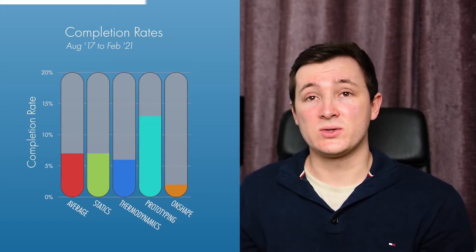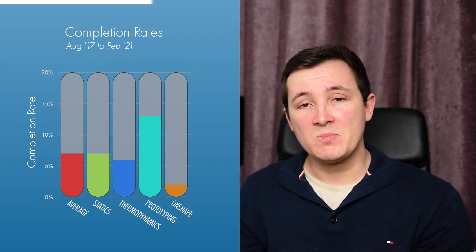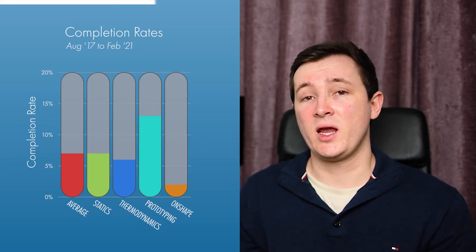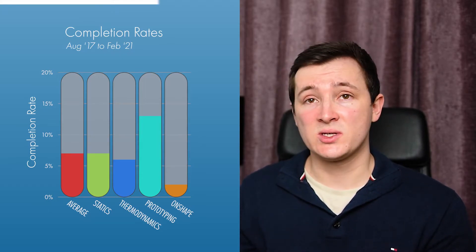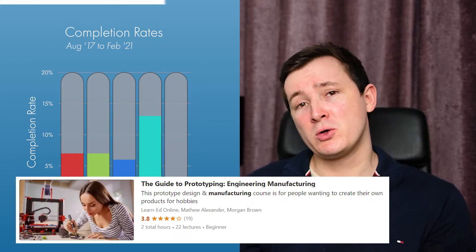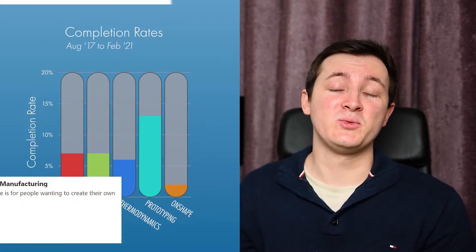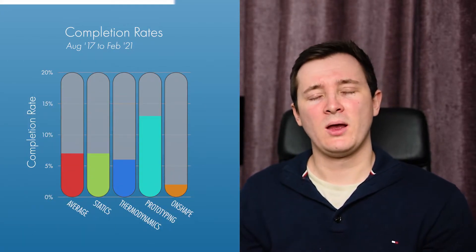My statics course is seven percent as well so that's got the largest number of enrollments so it makes sense that it falls in line with the average. Thermodynamics is six percent so about there but then what's a little bit strange is my prototyping course which is my lowest rated course has got a completion rate of thirteen percent which is a little bit strange.